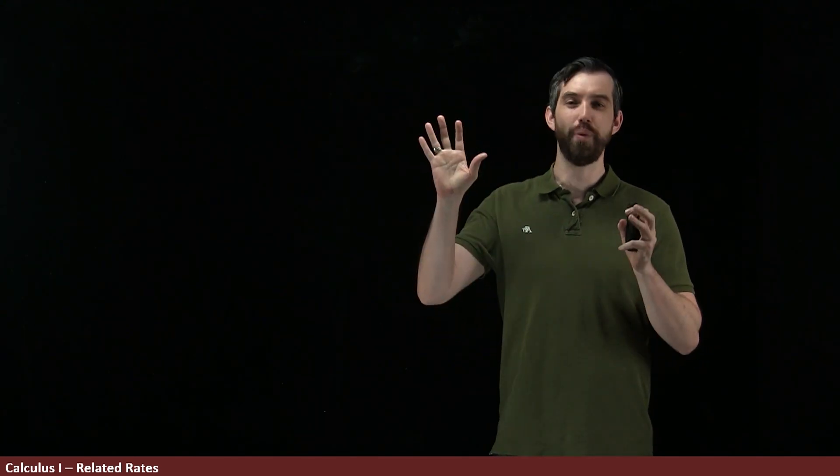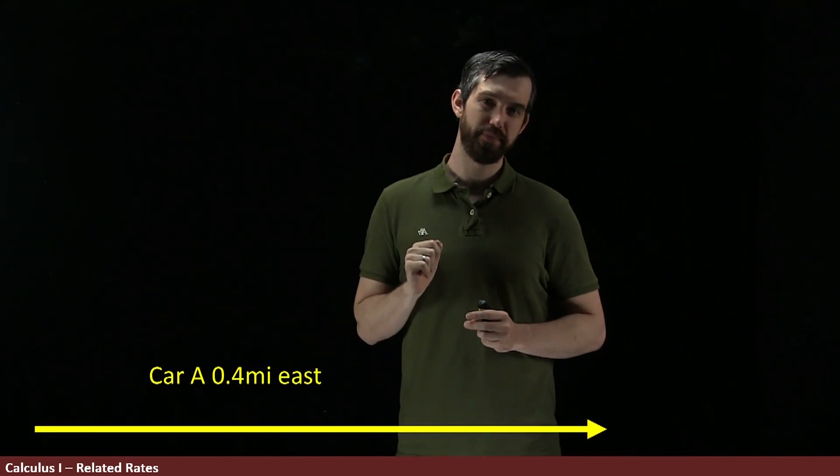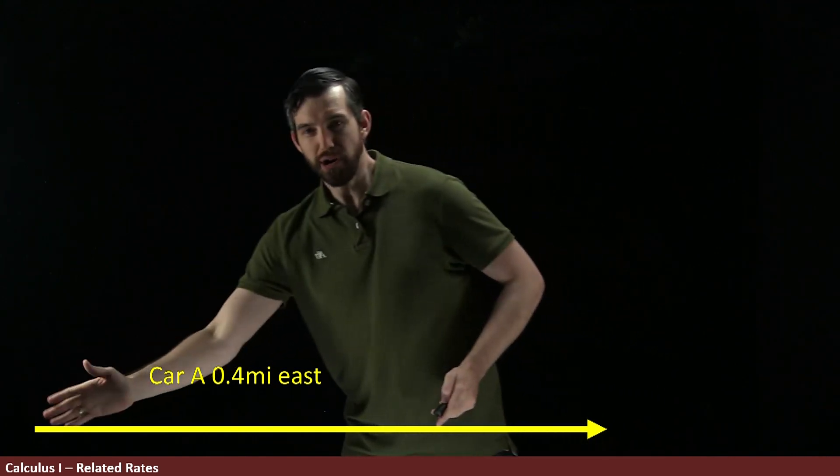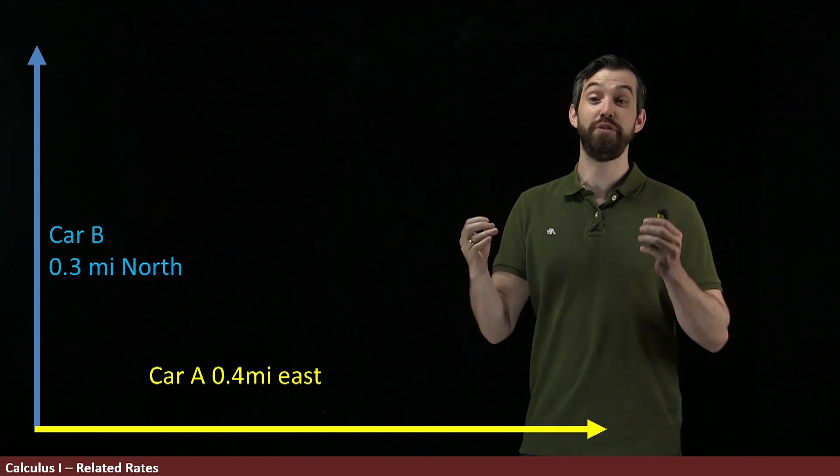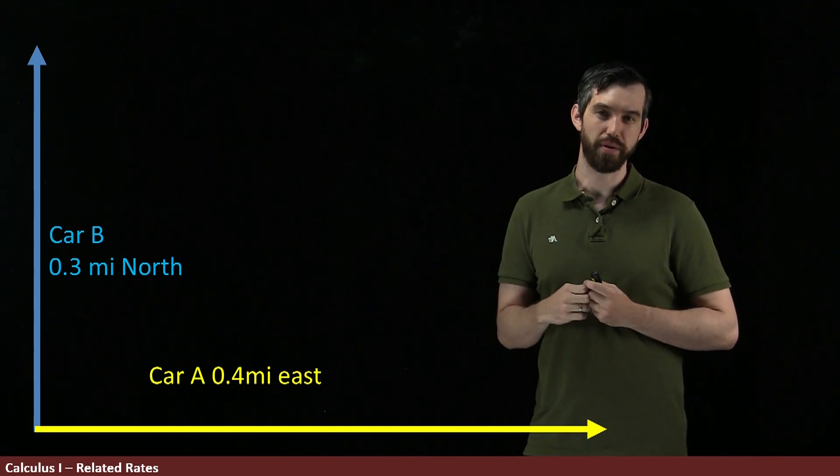So let me give you a specific example. I'm going to give you a word problem, and we're going to be interested in how one rate is related to a different rate. In this problem, I want to imagine you've got two different cars, and they're both going off and they're driving. The first car has gone and driven 0.4 miles east. And then you've got a second car that started at the same spot, but it's driving north, and it's driven 0.3 miles north.